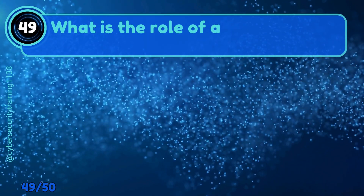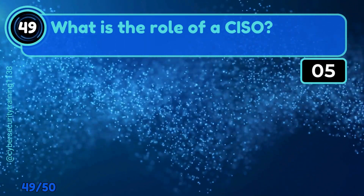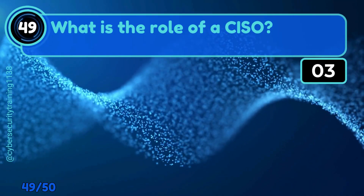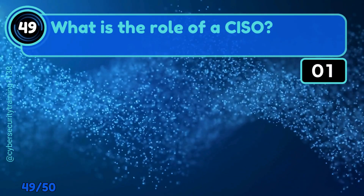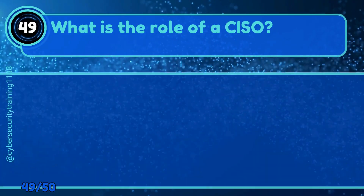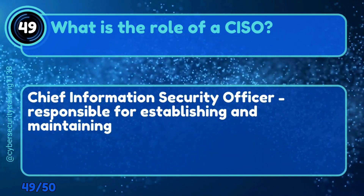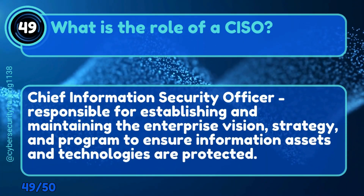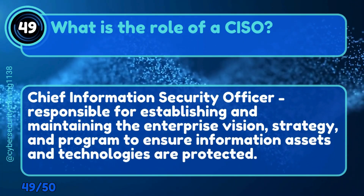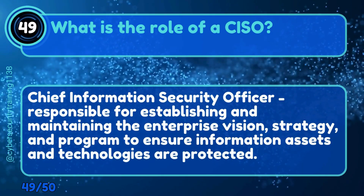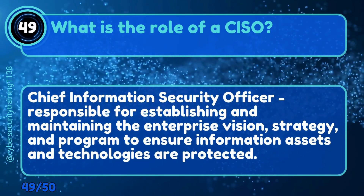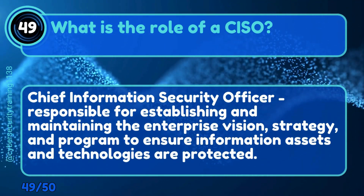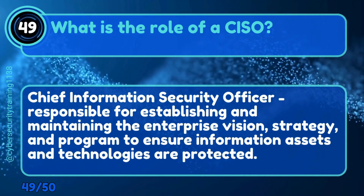Question 49: What is the role of a CISO? Chief Information Security Officer — responsible for establishing and maintaining the enterprise vision, strategy, and program to ensure information assets and technologies are protected.